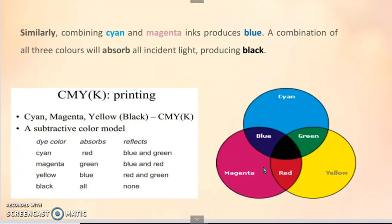Similarly, combining cyan and magenta inks produces blue. A combination of all three colors will absorb all incident light producing black. Here in the middle, you can see this is the intersection of all. A combination of all three colors will absorb the incident light which produces black color.